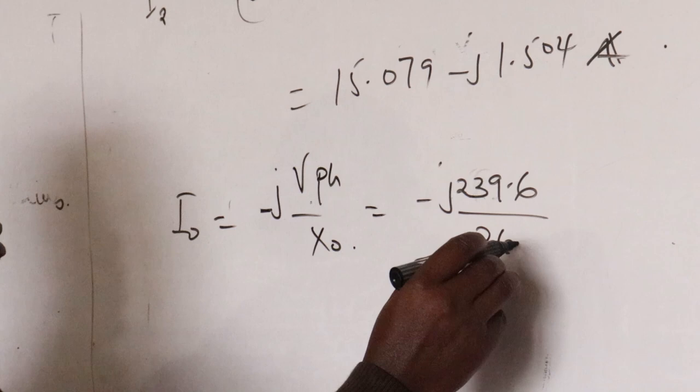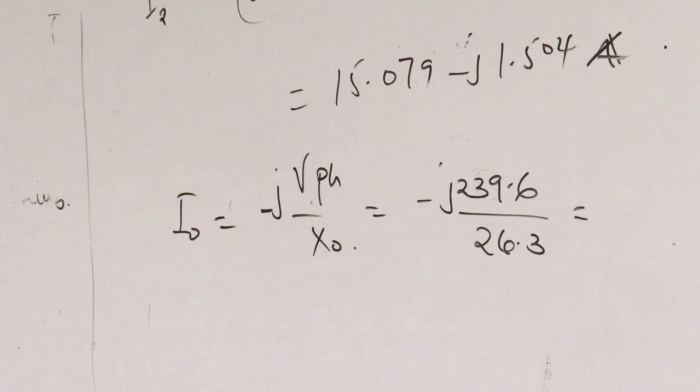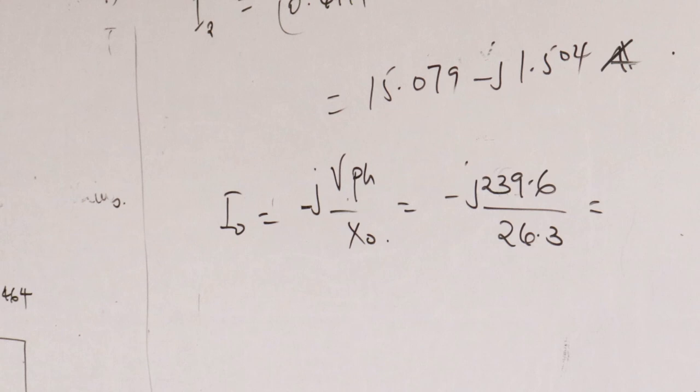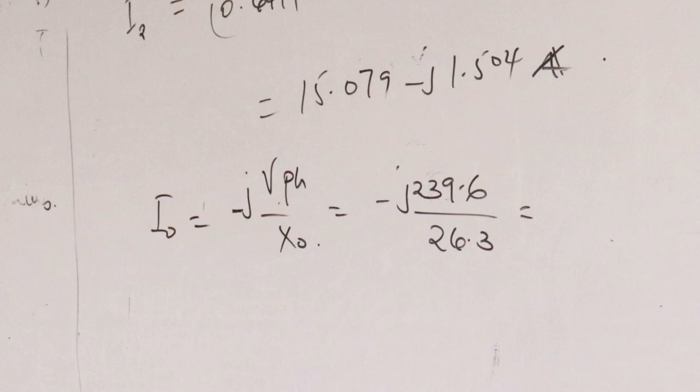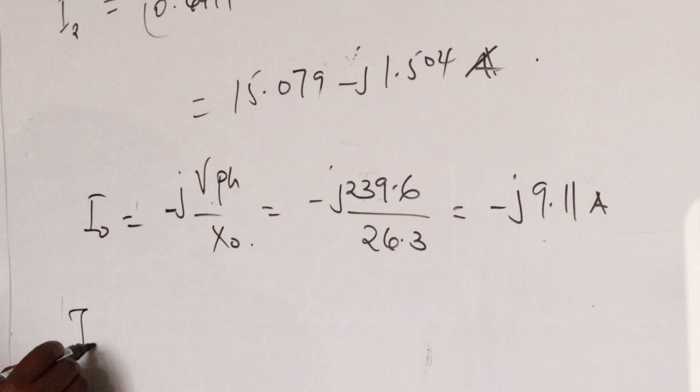Then I0 equals negative J times V per phase over X0, because R0 is not given — if not given, it is zero. So you only have negative J times V per phase over X0: negative J times 239.6 divided by 26.3, giving I0 approximately negative J 9.11.